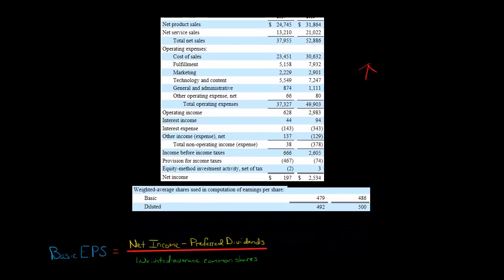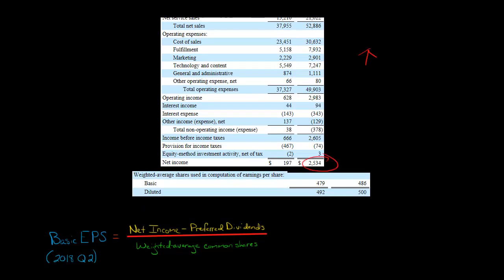So we're going to take the net income, and again, that's that $2.534 billion, and then now we're going to subtract preferred dividends. But in this case, Amazon hasn't issued any dividends, so we don't need to subtract anything here. So we're just going to have the net income divided by the weighted average common share. So $2,534 divided by 486.